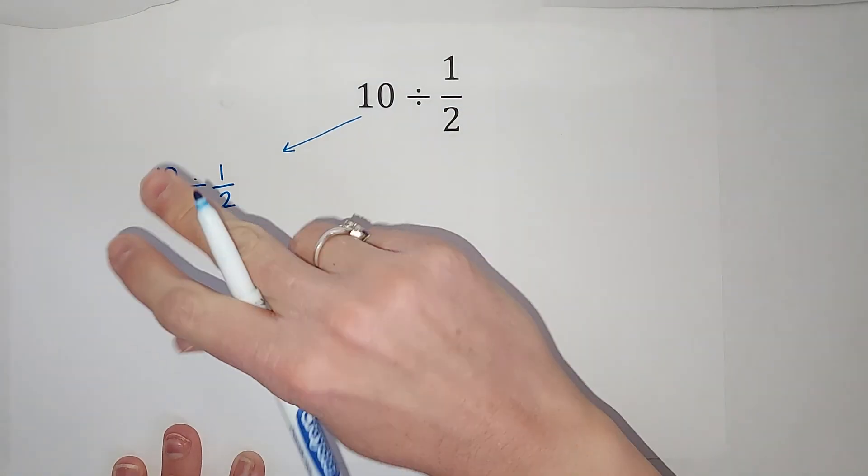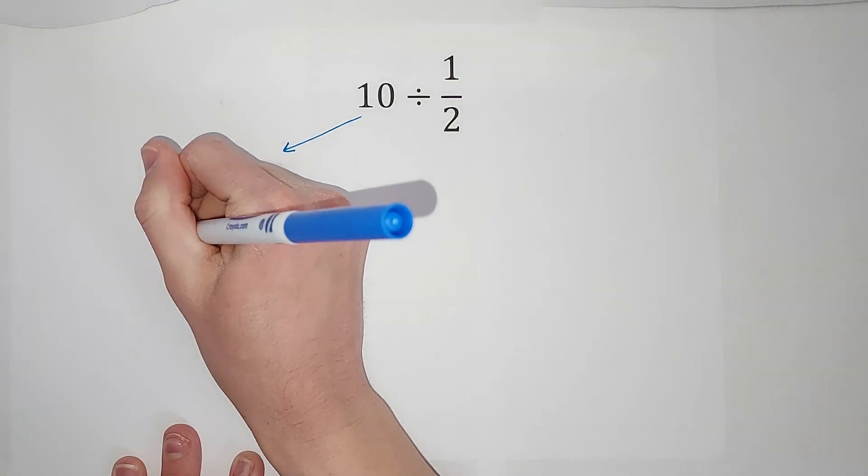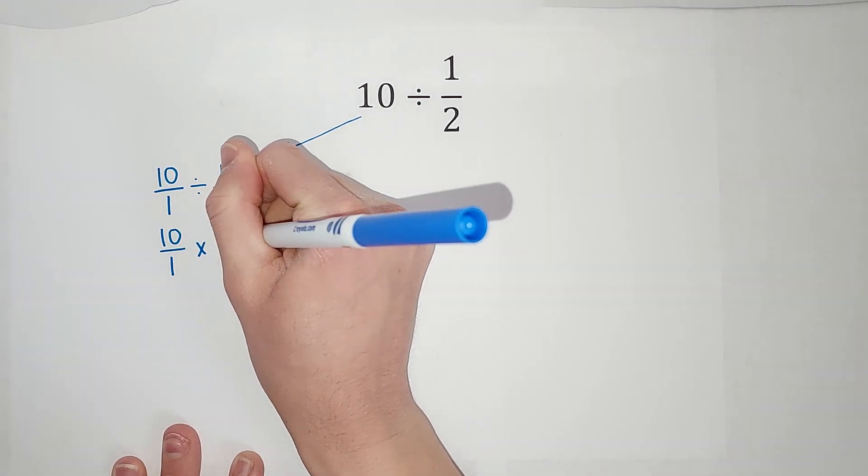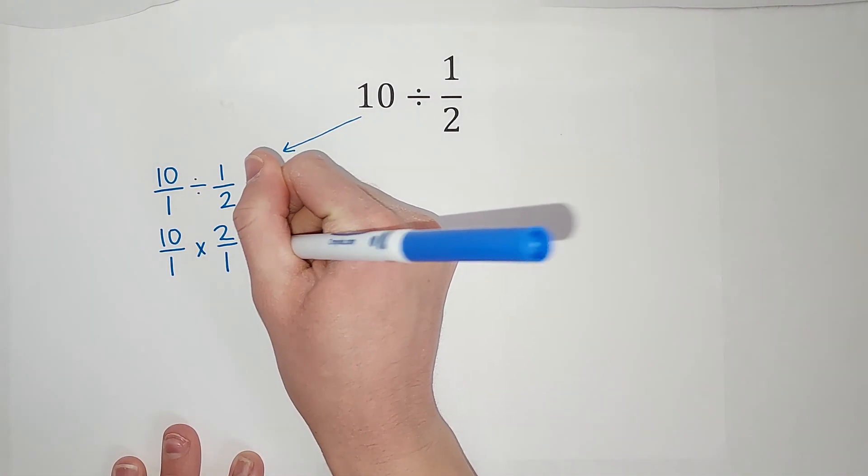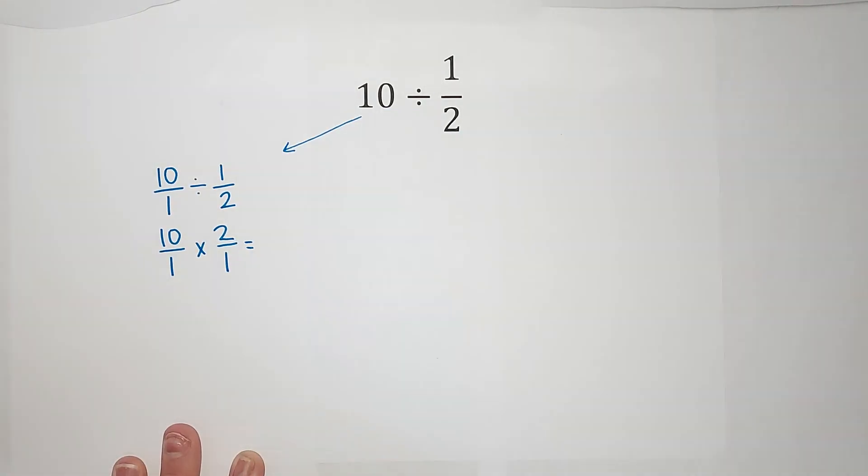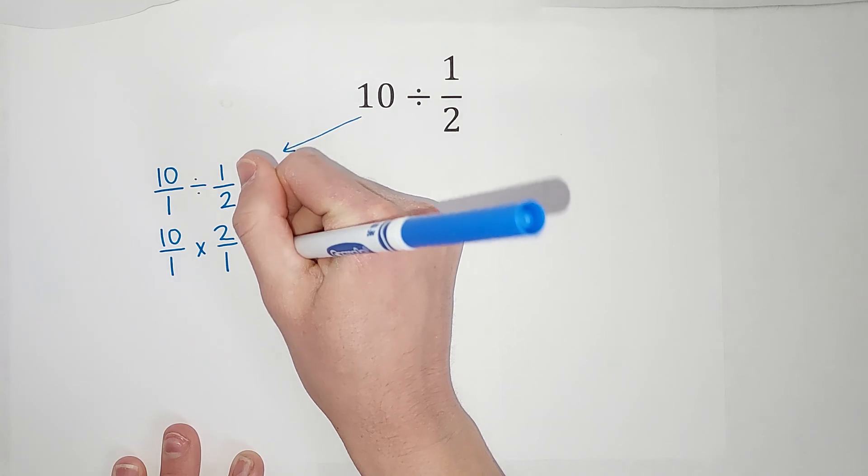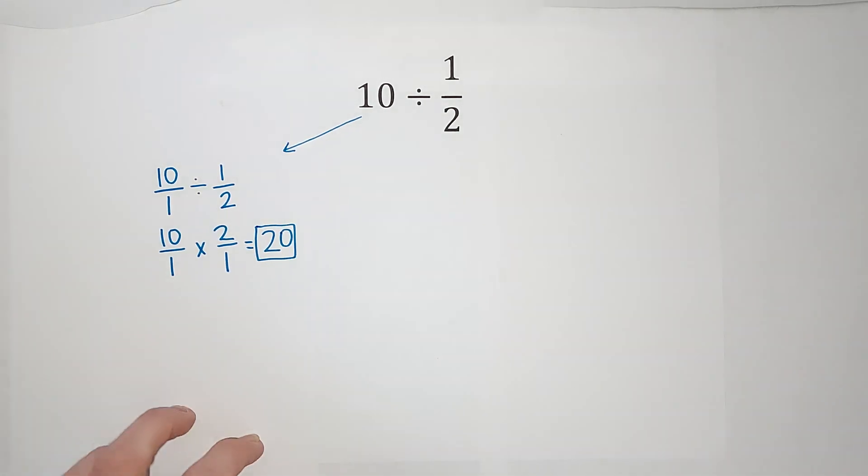So I would take this one and flip it, right? Use the reciprocal and multiply by two over one, which gives me 20 over one or just 20. So that's how I would do that. But now let's look at it another way.